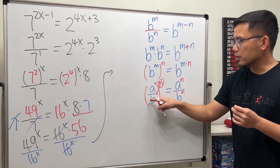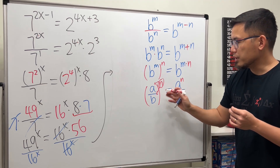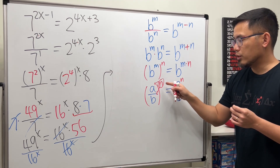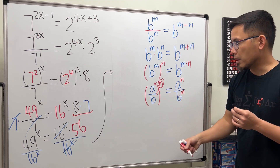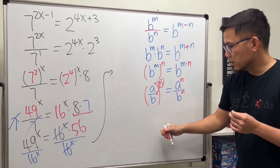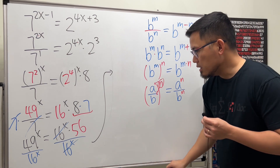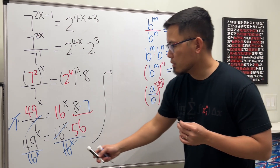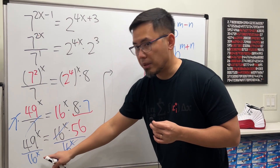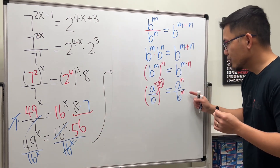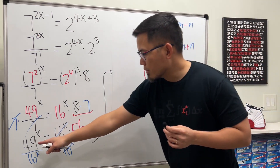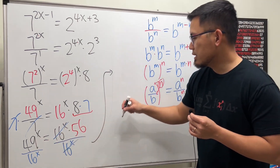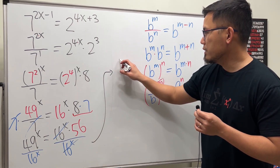When you have a multiplication or division inside and then to the nth power, you get to distribute powers. That's exactly what we do, but again, do it backwards. So I'm going to put this down as 49.